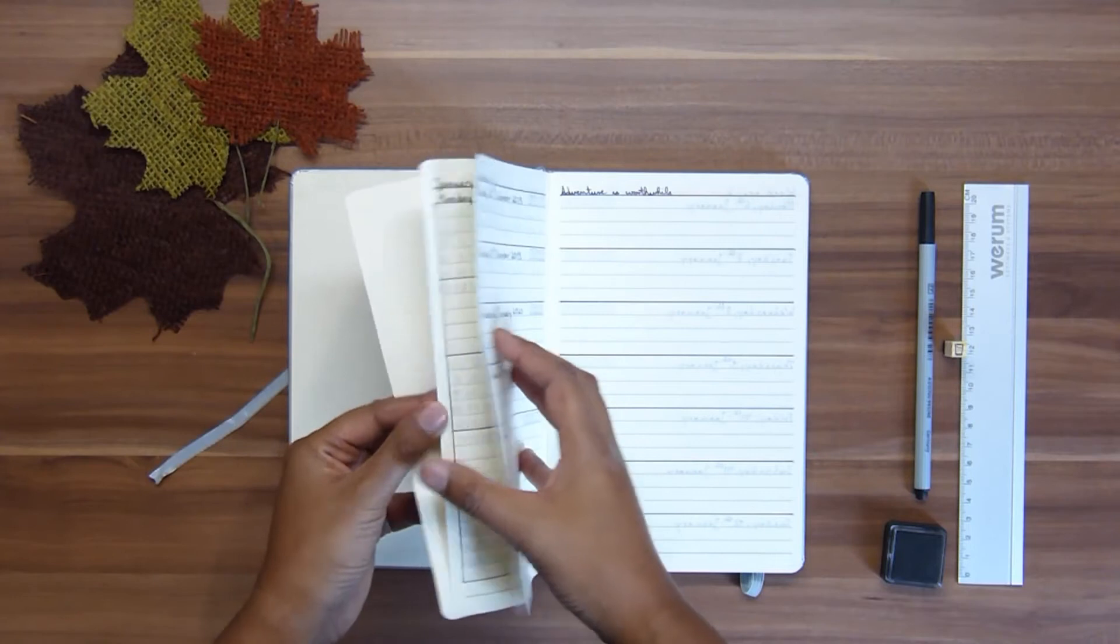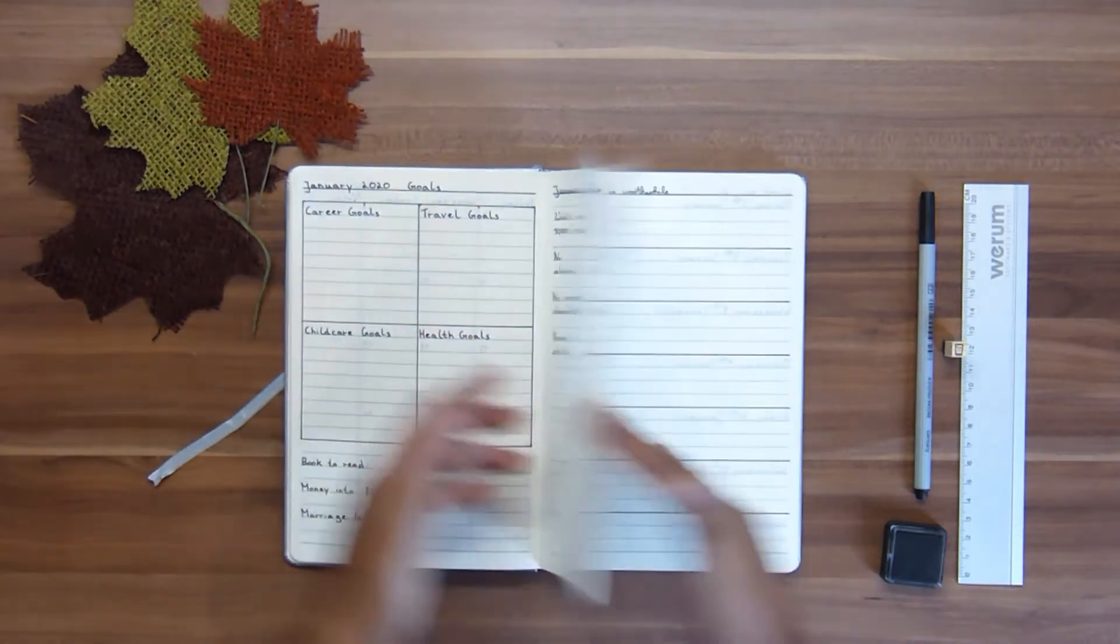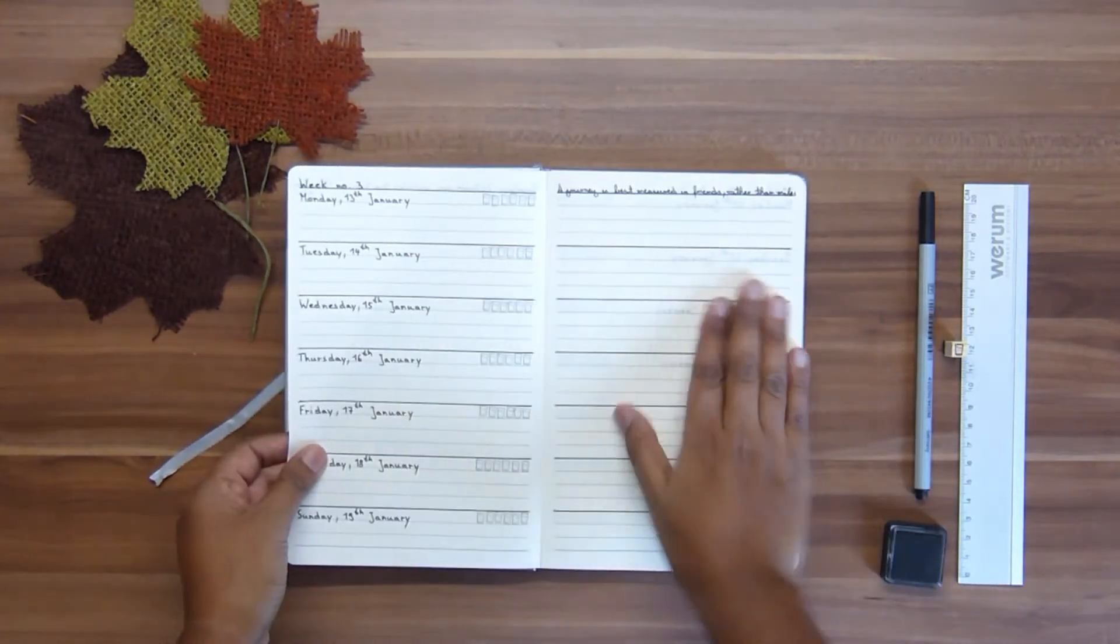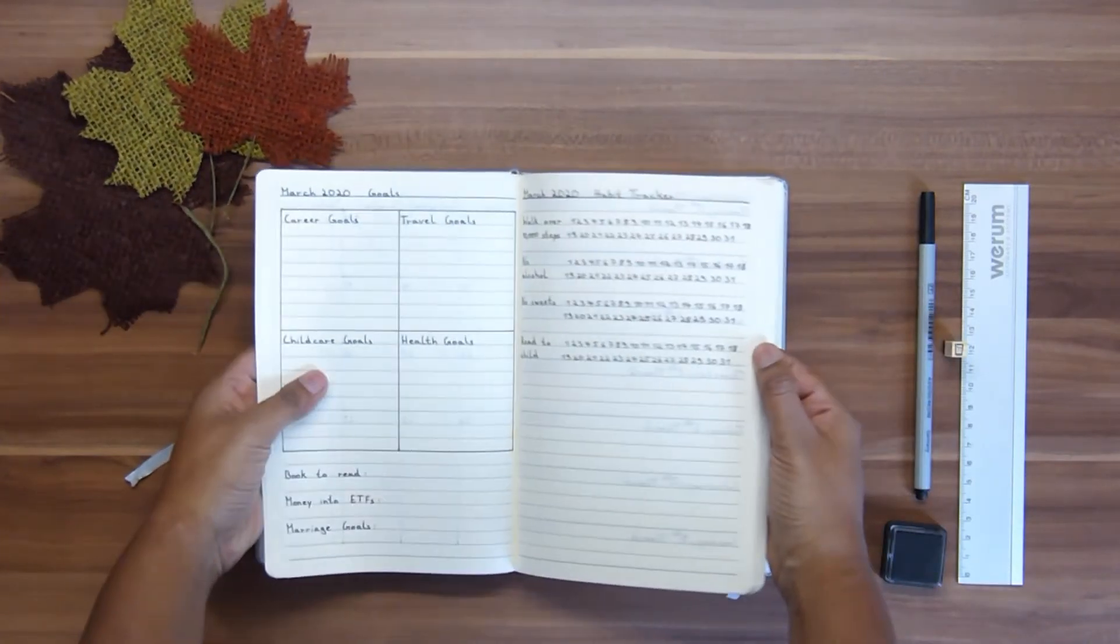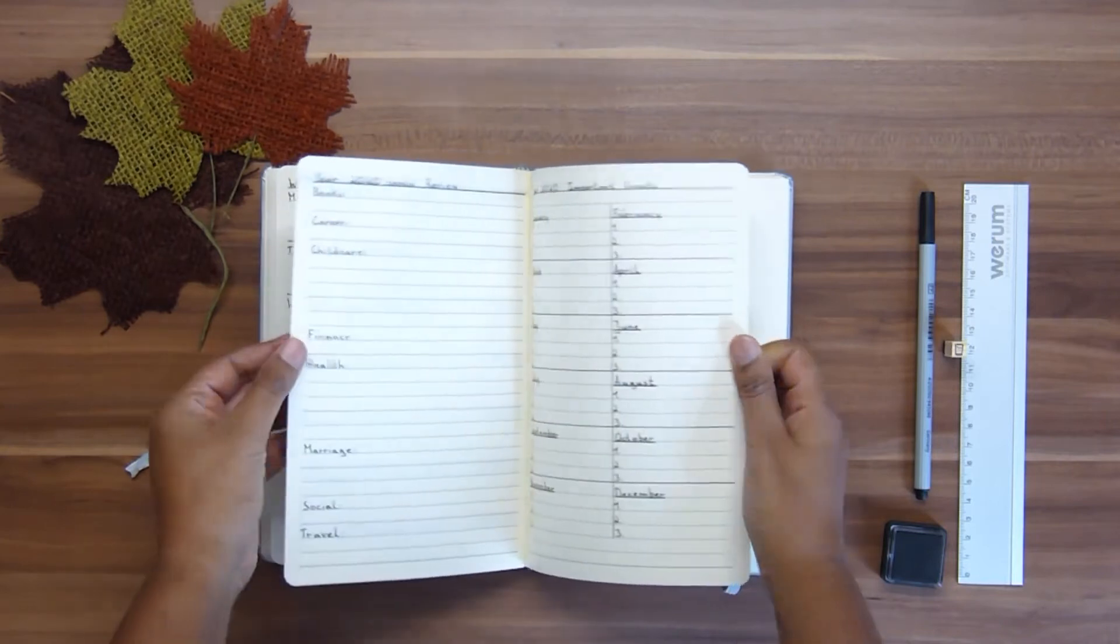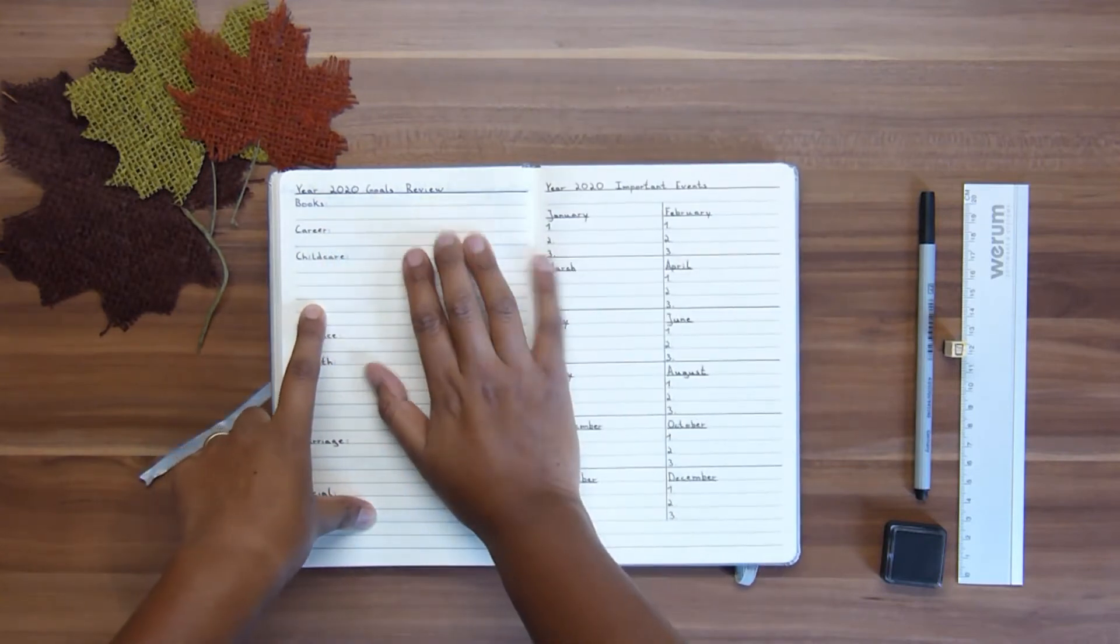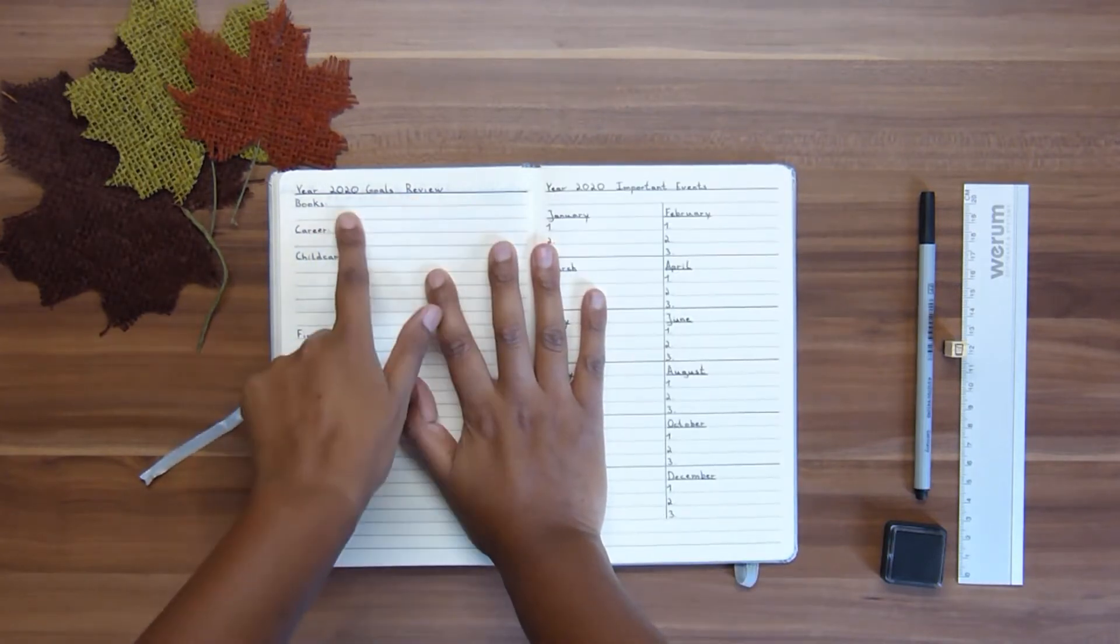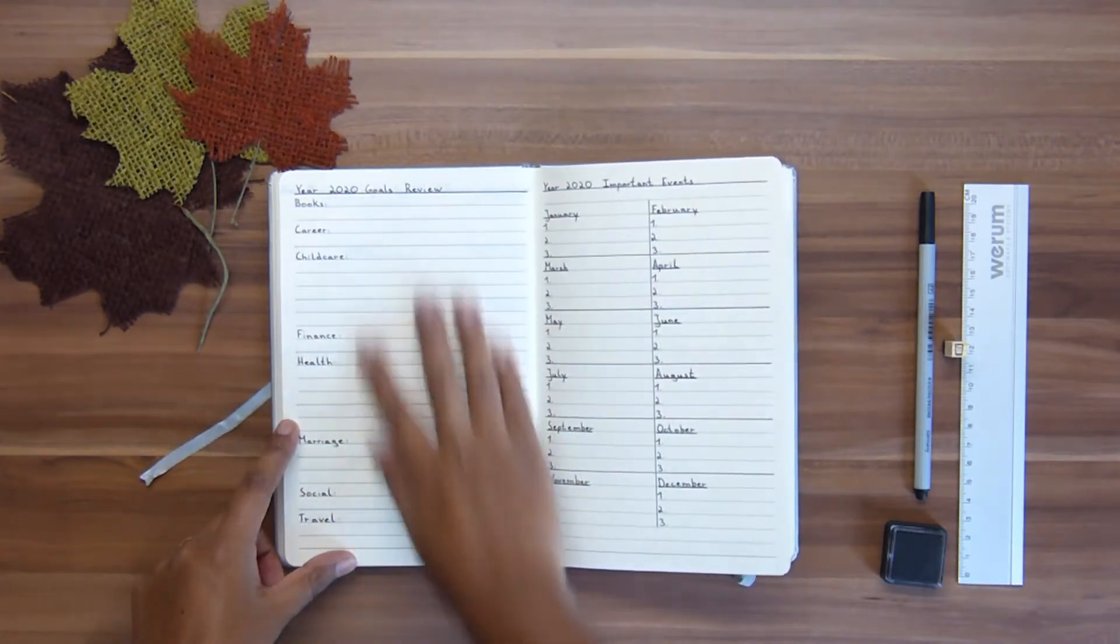So this layout - the monthly spread, the monthly overview, the goals, the habit trackers, and then the weekly spreads with the travel-related quote and the glasses for drinking - is always the same for the whole year. I've just put it in all the way to the very end. At the very end, I have one page to review my goals. I'm going to put in if I reach that goal, if I've read 12 books or more or less, if I've reached my savings goal and travel goals. On this side I have important events - for each month I'm going to put in the three most important events that happened in 2020.